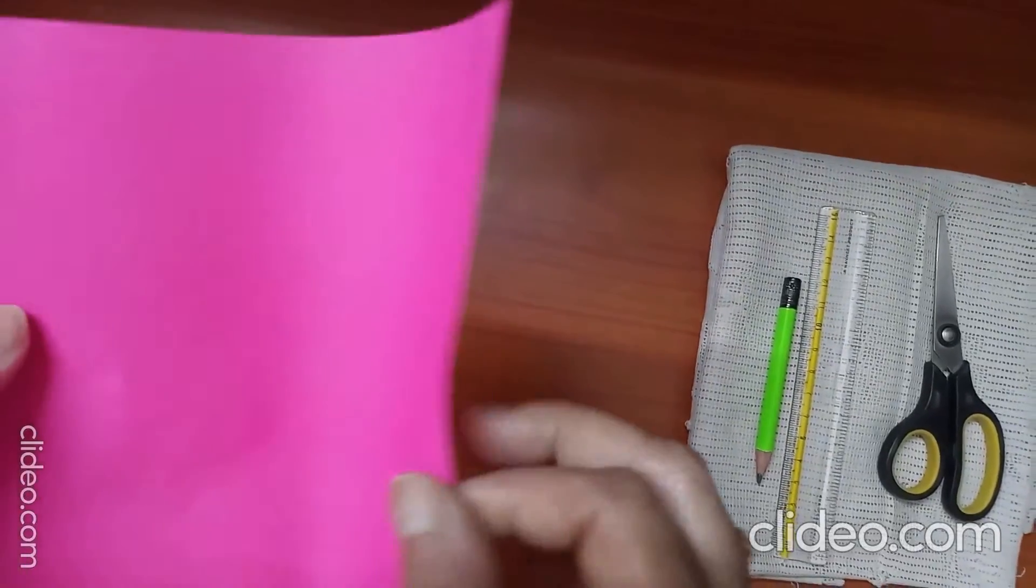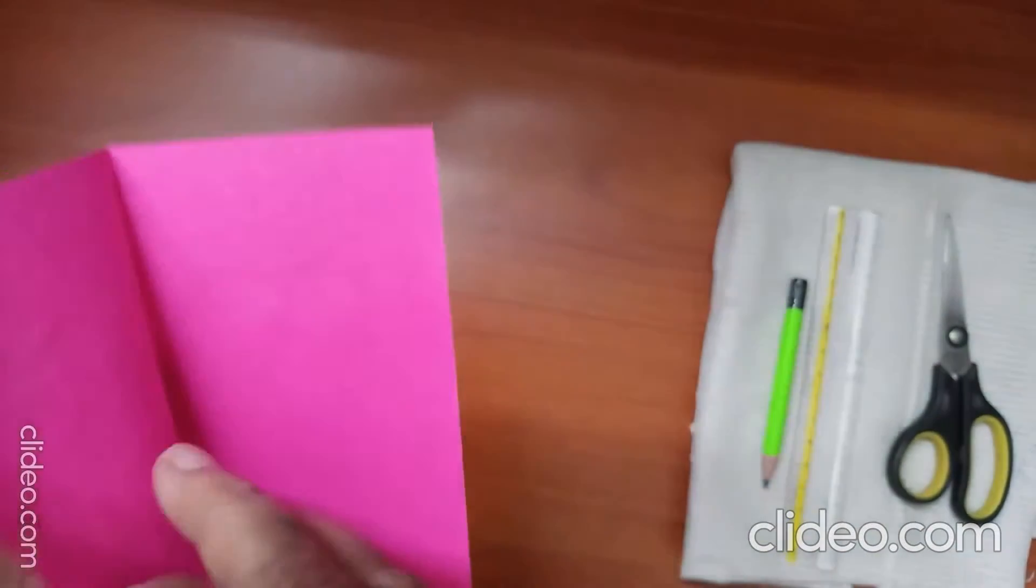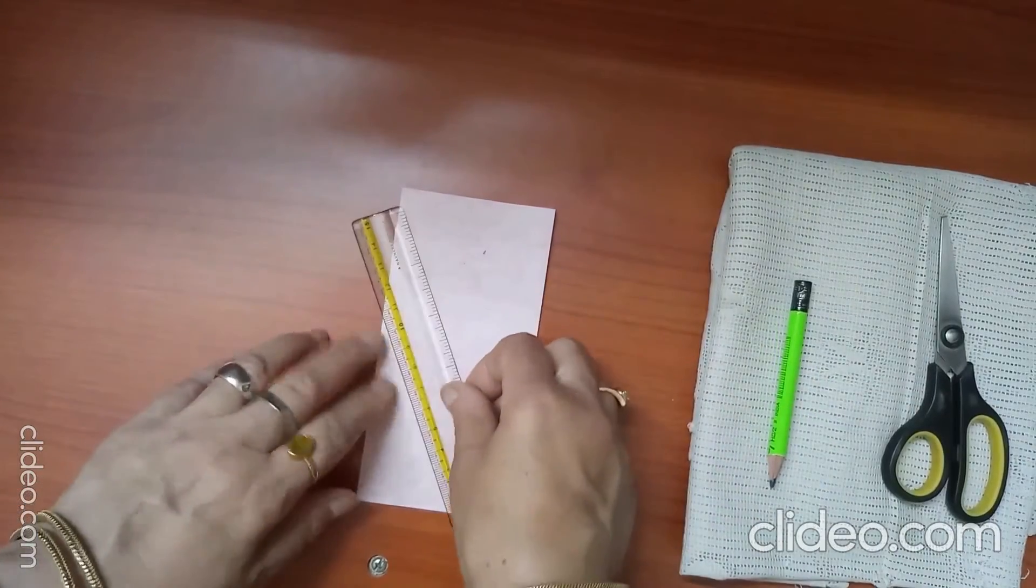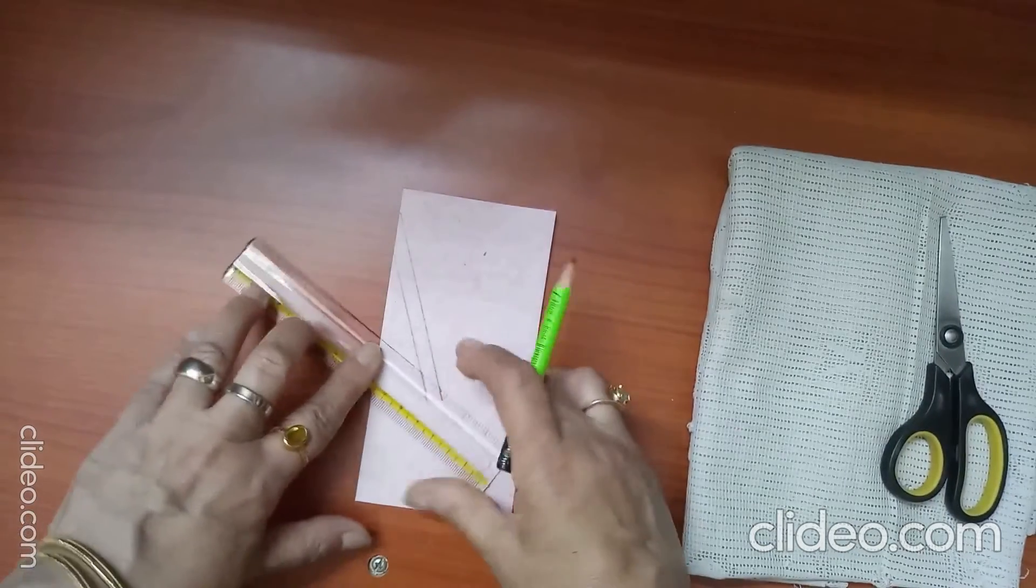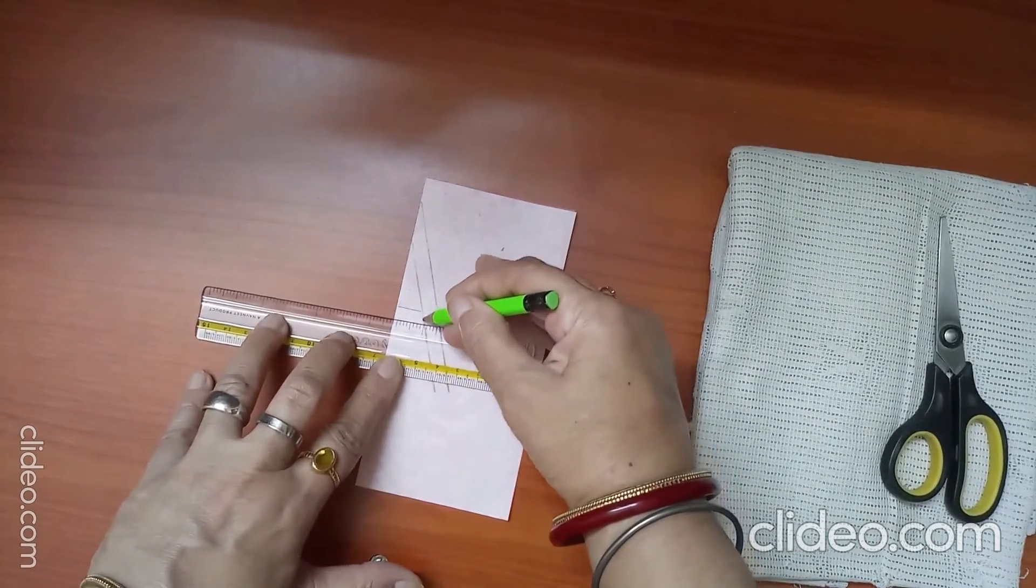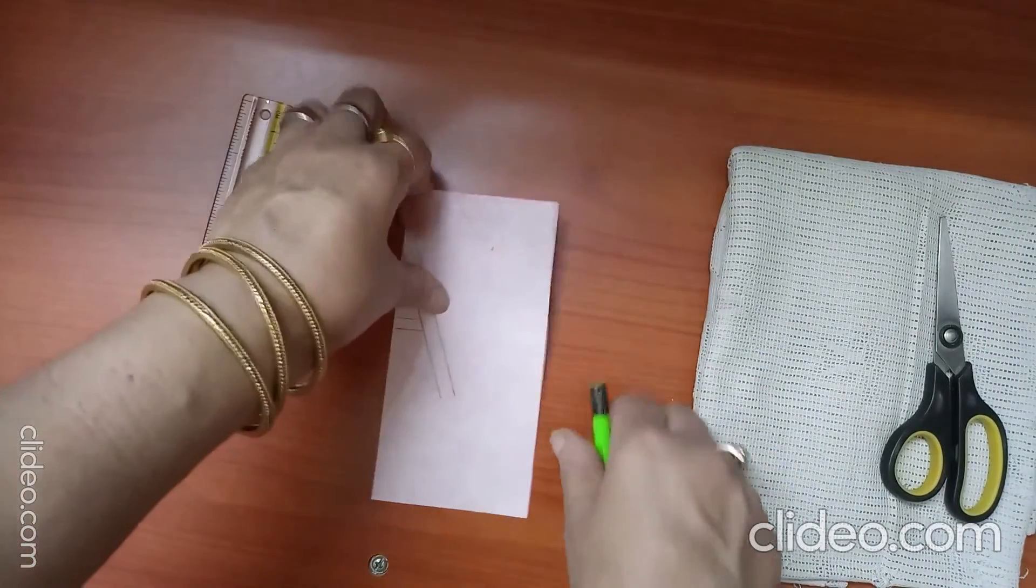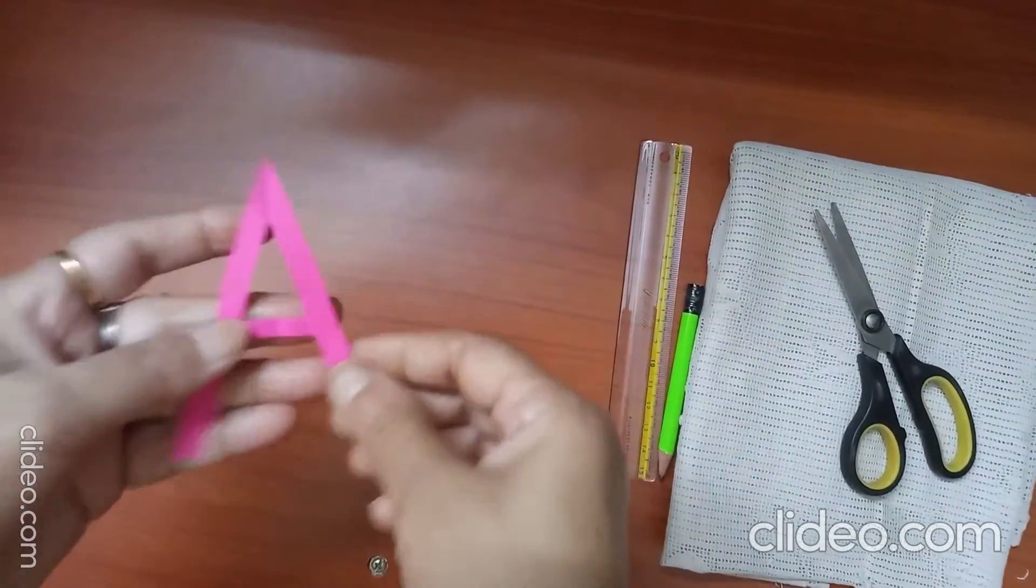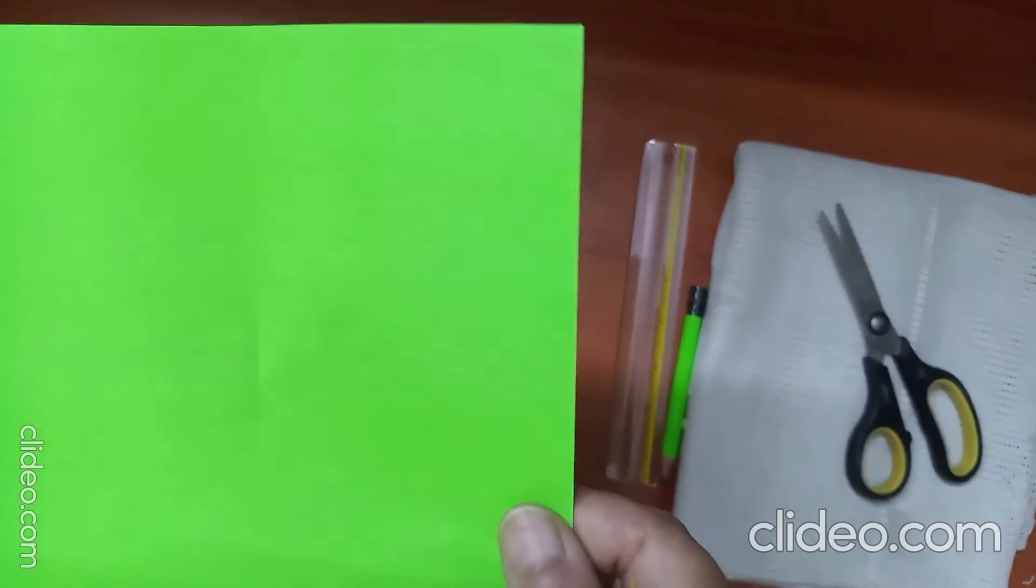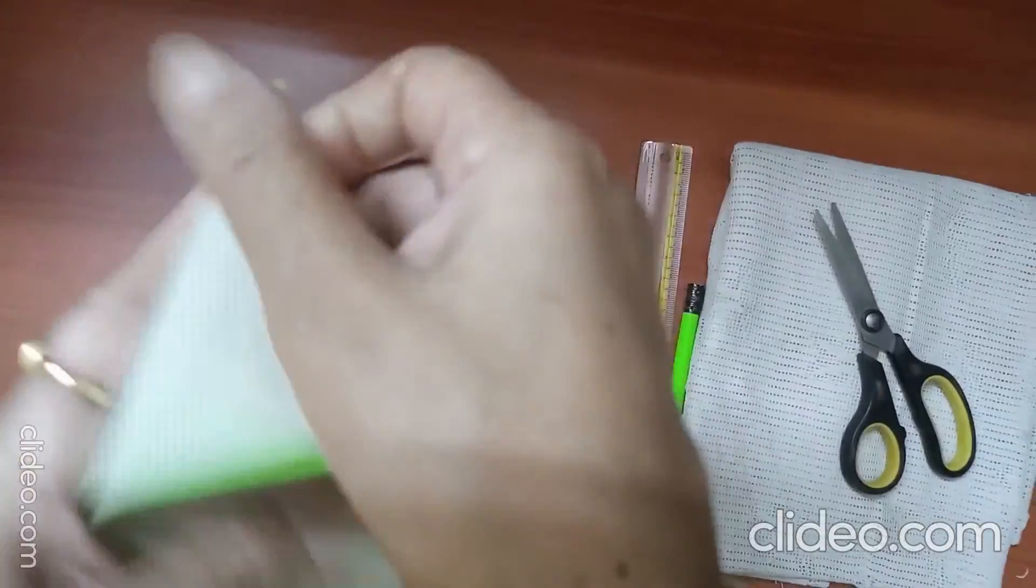Take one origami sheet. Fold it in half. Press it from the crease. Now draw letter A from one side. Draw only one part of letter A. Now cut it. Then we will fold this square in half.